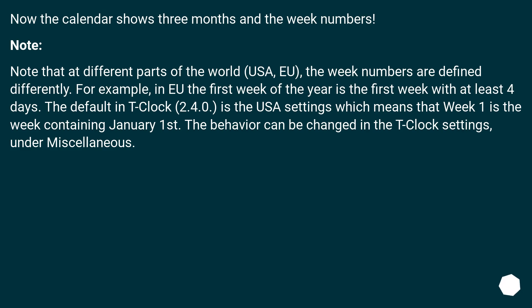Note that in different parts of the world, the week numbers are defined differently. In the USA and EU, the week numbers differ. For example, in the EU the first week of the year is the first week with at least 4 days. The default in T-Clock 2.4.0 is the USA setting, which means week 1 is the week containing January 1st. This behavior can be changed in the T-Clock settings under Miscellaneous.